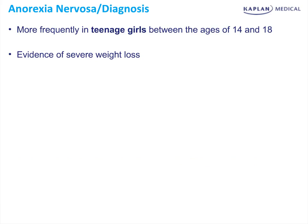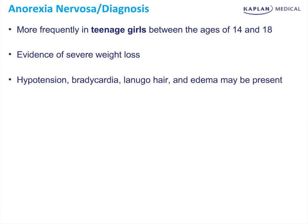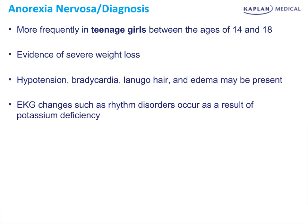Physical findings can include hypotension, bradycardia, lanugo hair, and edema. EKG changes such as arrhythmic disorders can result from potassium deficiency, and arrhythmia is the most common cause of death in these patients. This is one reason why you admit these patients — the electrolyte imbalances and metabolic disturbances can become life-threatening and potentially fatal.